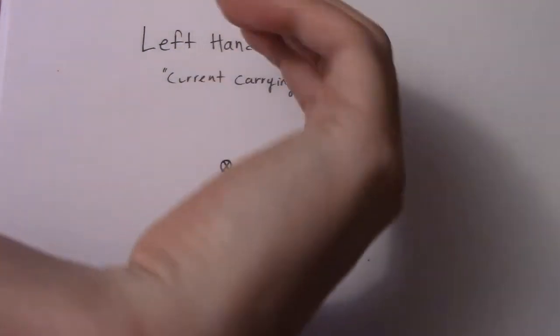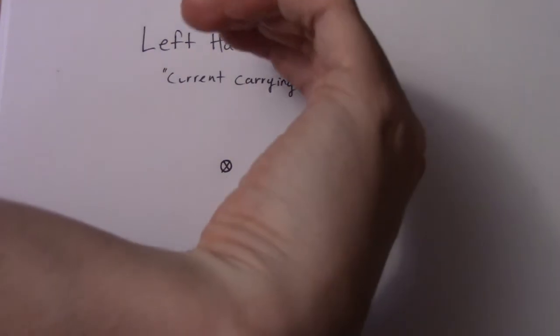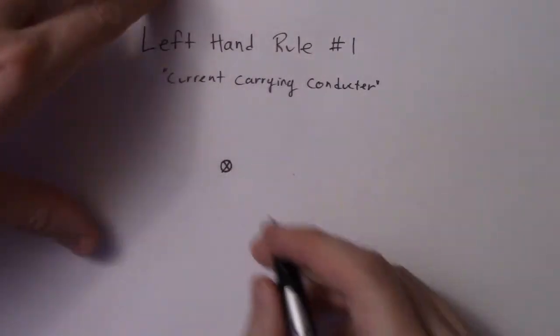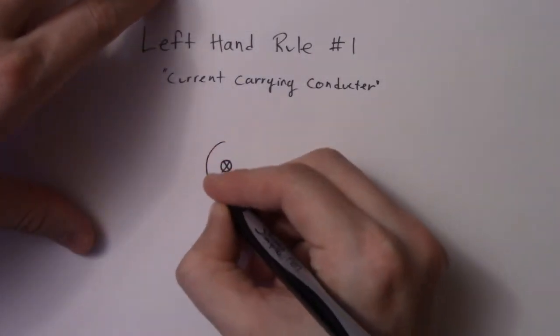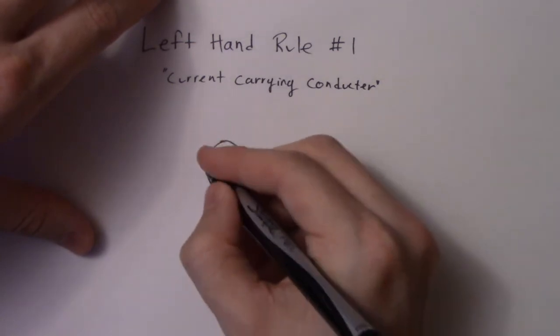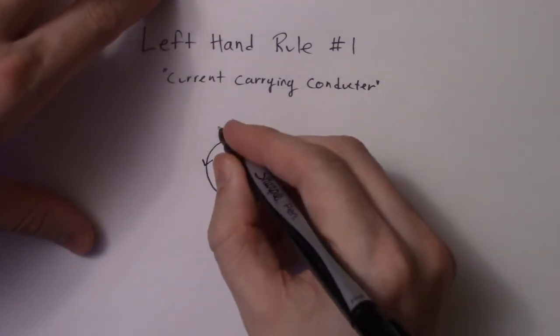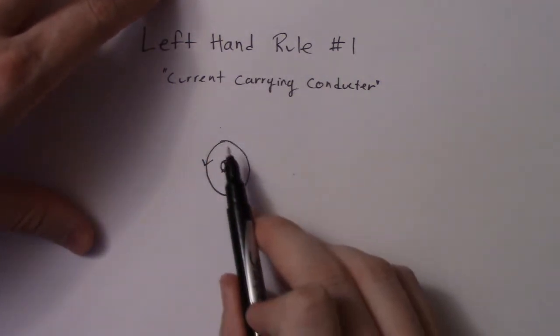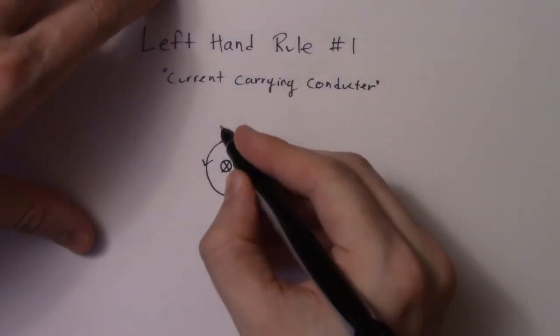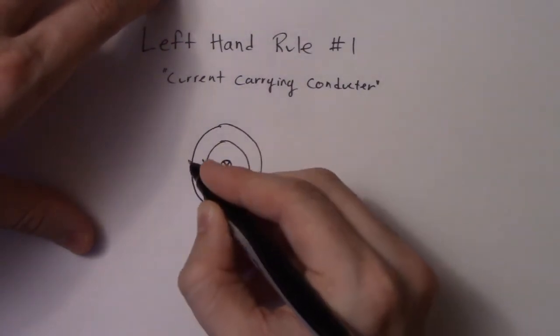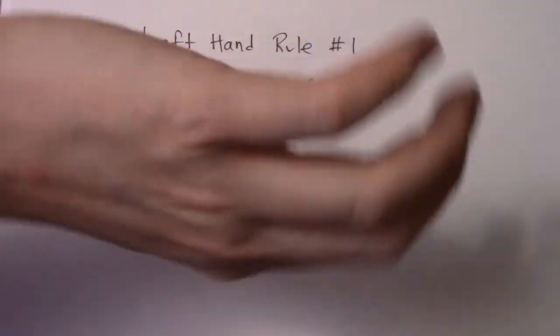I'm curling my fingers around. So if I curl my fingers around this wire, I'm creating a counterclockwise motion around it. That is what happens to the magnetic field.